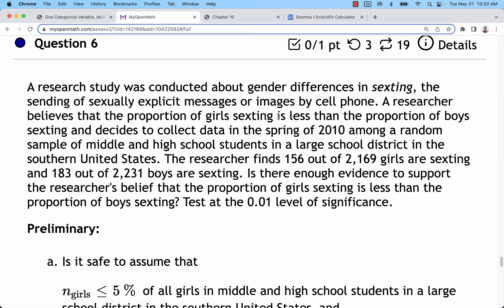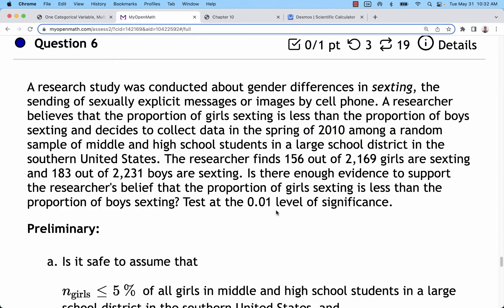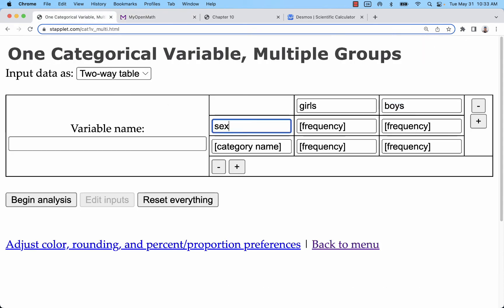I would start by just filling out these group names. We have boys and girls. These are middle schools. We want to compare, and it says girls are sexting less than boys. Since it's stating girls first, I'll flip this around so that it lines up better. We're going to have girls less than boys for our hypothesis, and we're breaking it down to are they sexting or not.